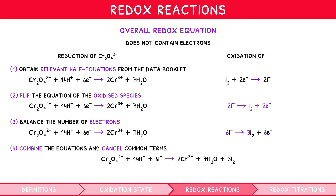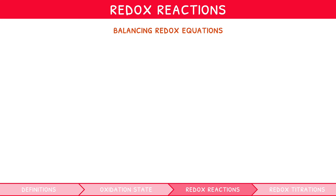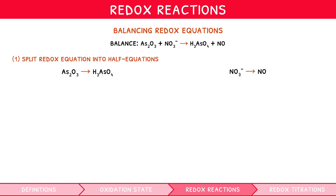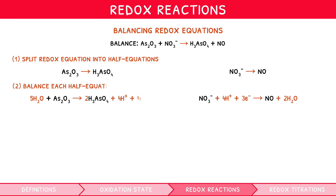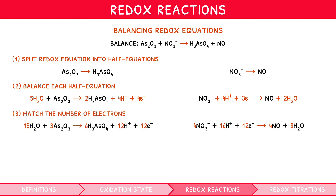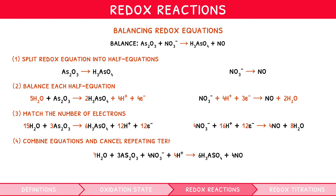Now that you understand how to create a redox equation, it also follows that you would be expected to balance an existing redox equation — this is a four-stage process. Consider: As₂O₃ + NO₃⁻ → H₃AsO₄ + NO. First, split the redox equation into its two half equations. Second, balance each half equation by balancing all atoms except hydrogen and oxygen, then use H₂O to balance oxygen, H⁺ to balance hydrogen, and electrons to balance charge. Third, match the number of electrons by multiplying the left by 3 and the right by 4. Finally, combine them and cancel any repeating terms — here the 8H₂O and 12H⁺.